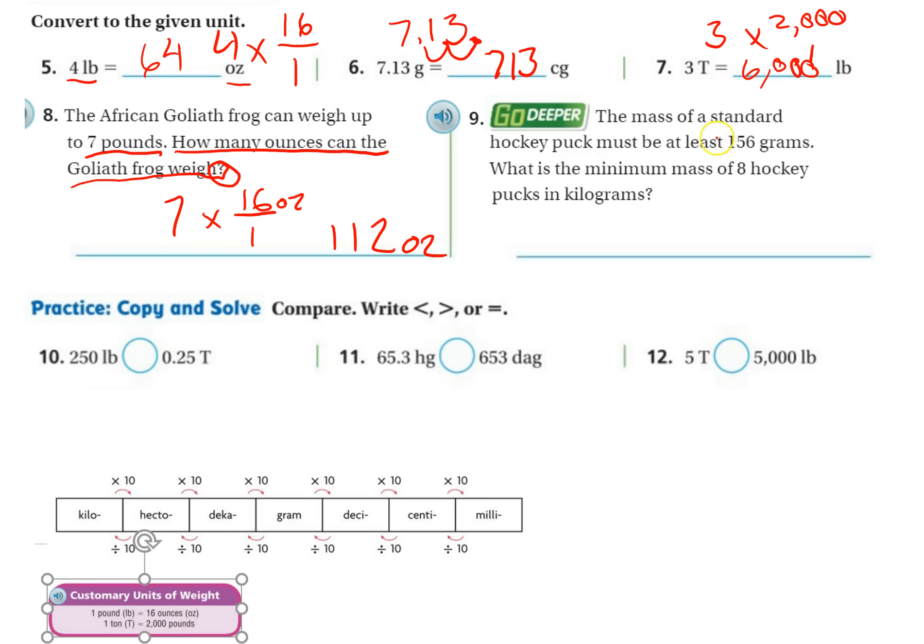Number nine: The mass of a standard hockey puck must be at least 156 grams. What is the minimum mass of eight hockey pucks in kilograms? Okay, so we got a two-stepper here. It must be at least 156, but I got eight of them, so I'm going to multiply that by eight. Eight times six is 48, eight times five is 40, plus four is 44. Eight times one is eight, plus four is 12. So I have 1,248, and it was grams.